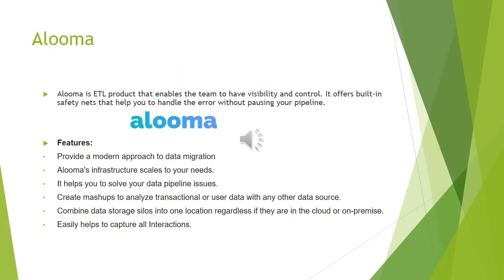The second commercial ETL tool is Aluma. Aluma is an ETL product that enables the team to have visibility and control. It offers built-in safety nets that help you to handle errors without pausing your pipeline. Some features of Aluma are: it provides a modern approach to data migration, Aluma's infrastructure scales to your needs, it helps you to solve data pipeline issues, it creates mashups to analyze transactional or user data with any other data source, and it combines data storage silos into one location regardless if they are in cloud or on premise.